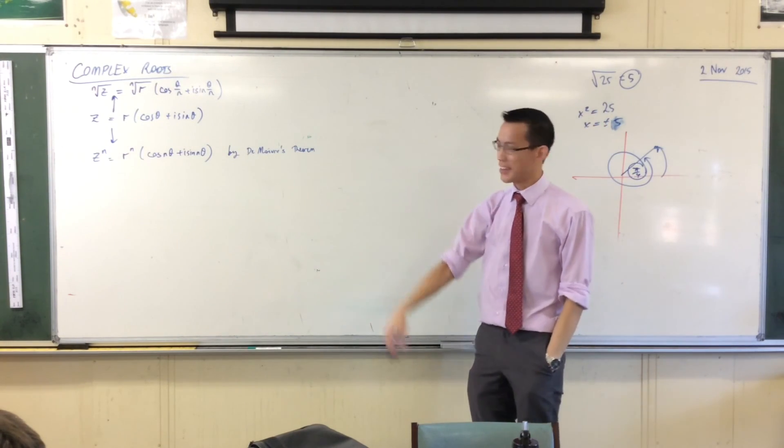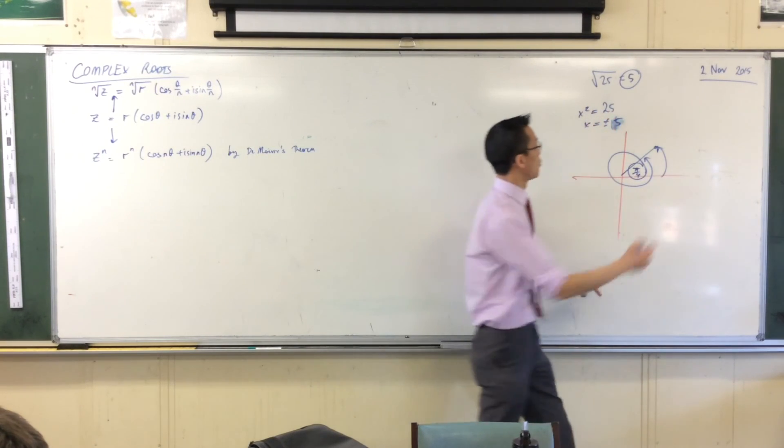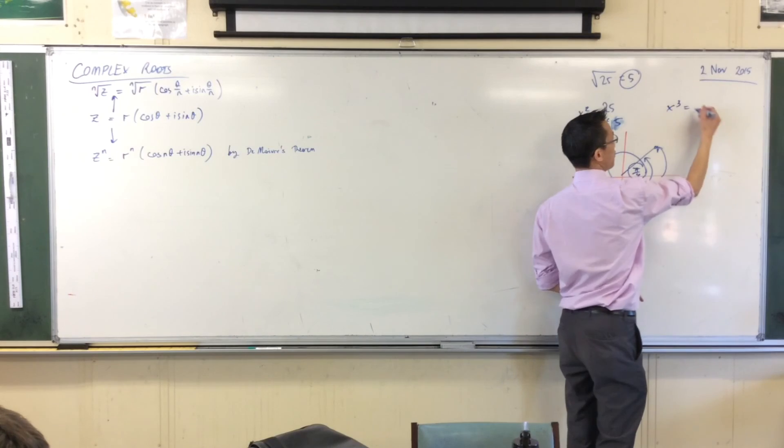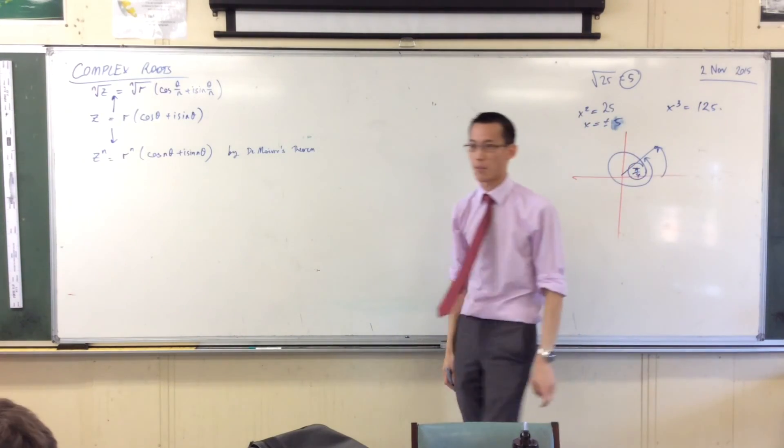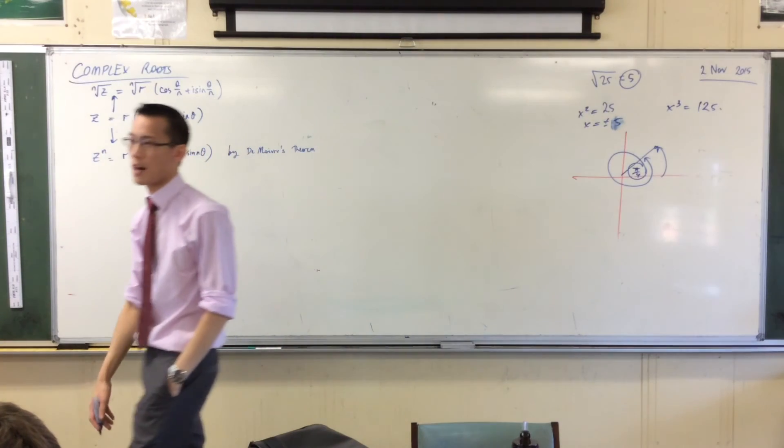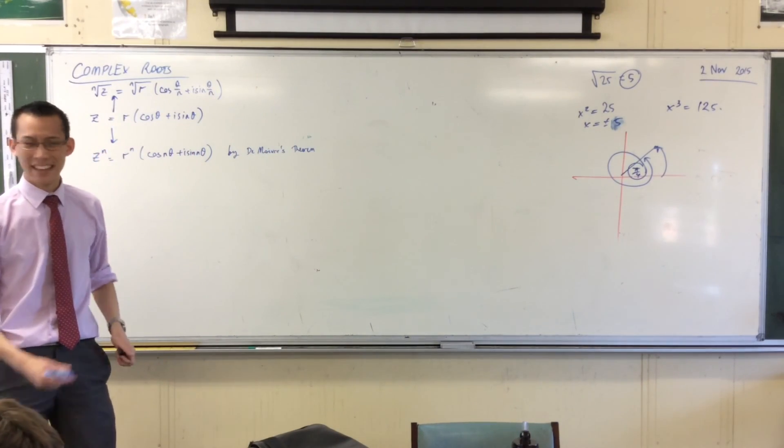But when we look at complex numbers, things open up a lot more than this. A number has two square roots, what about if I asked you for this? This is just the same number. How many cube roots are there of 125? Three. That's one. One. That's one. That's one.